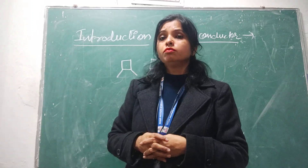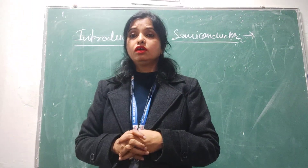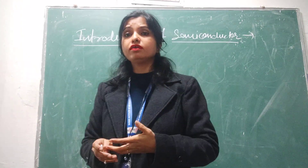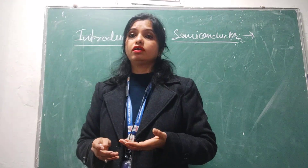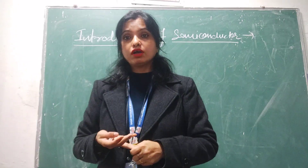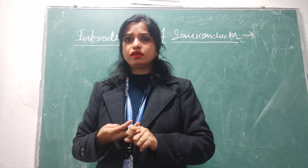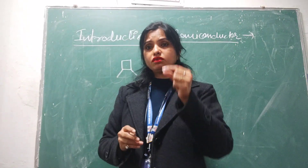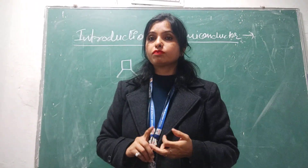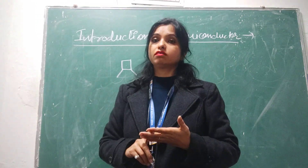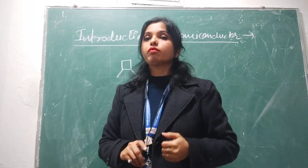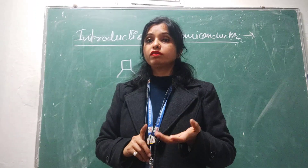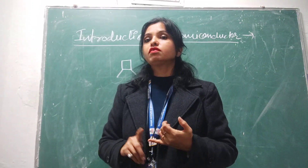Earlier TVs used vacuum tubes. With vacuum tubes, we had very high input voltage, the size was very large, and conduction could not be easily controlled. With semiconductors and small chips, the size is much smaller, the input voltage required is less, and the conduction is controllable — we can control it. That is why we use semiconductors instead of vacuum tubes.